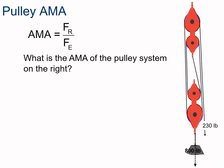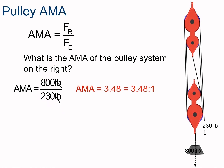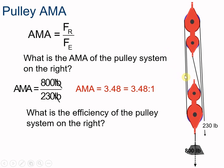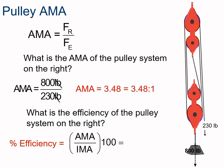Here's a pulley system. What is the AMA based on the two forces shown? Pause the video and solve. AMA is the resistance force divided by the effort force — 800 pounds divided by 230 pounds — giving us 3.48 to 1. For efficiency, we count the strands to find the IMA, then divide AMA by IMA times 100: 3.48 divided by 4 times 100 equals 87%.